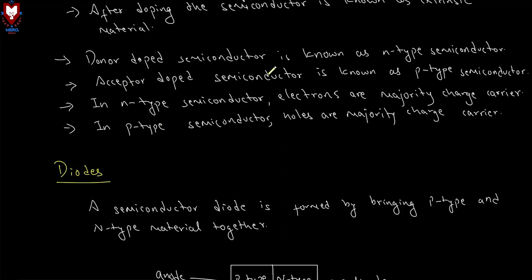Donor doped semiconductor is known as N-type semiconductor. Acceptor doped semiconductor is called P-type semiconductor.